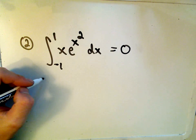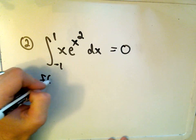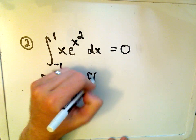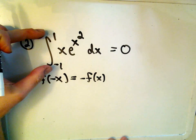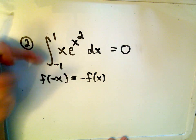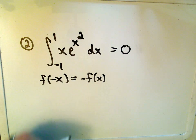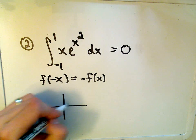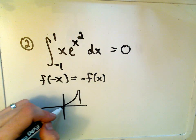And remember, the idea is if you have an odd function, so again, an odd function means f of negative x equals negative f of x. The thing that sticks out to me is the symmetric interval. It goes from negative 1 to positive 1. Likewise, if it went from negative 10 to positive 10, etc.